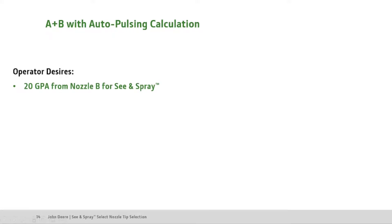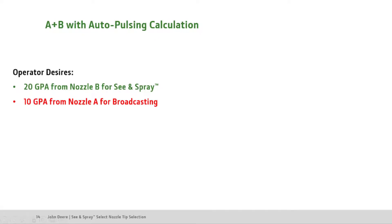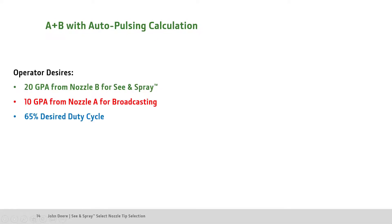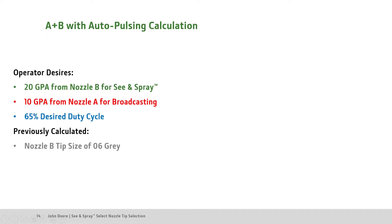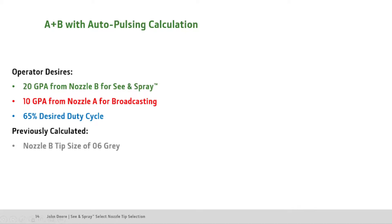Let's walk through an example where the operator wants to spray with A plus B with auto-pulsing, where Nozzle B See & Sprays and Nozzle A broadcasts with auto-pulsing enabled. The operator wants to spray at a desired See & Spray rate of 20 gallons per acre out of Nozzle B and a desired traditional broadcast rate of 10 gallons per acre out of Nozzle A. The operator also desires 65% duty cycle for optimum turn compensation while pulsing from Nozzle A. We will also use our previously calculated 06 gray Nozzle B tip size since the See & Spray rate is the same from our first example.